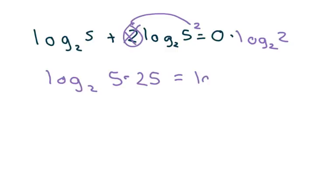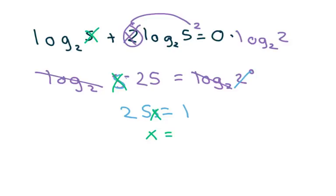Log₂(25s) equals log₂(2⁰). Cross that out and you get 25s = 1. I wish this was an s, change this to x real quick. So we have x = 1/25, and that works when you plug it into the s because 1/25 is greater than 0.